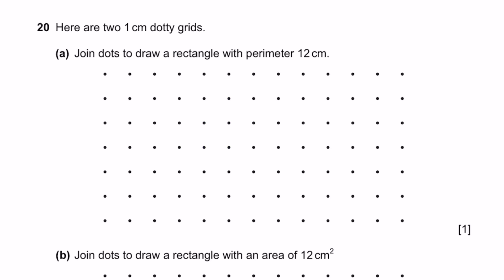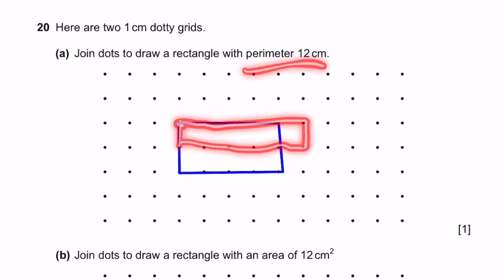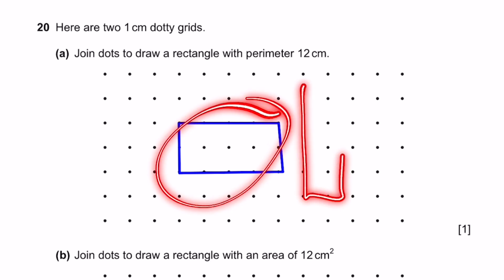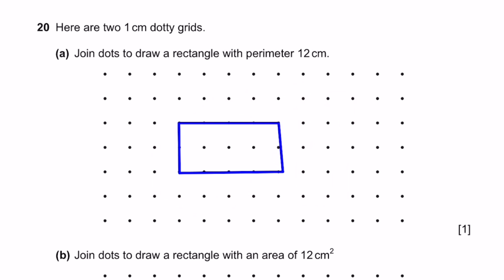Question 20. Here are two 1 centimeter dot grids. A. Join dots to draw a rectangle with perimeter 12 centimeters. That means 2 into L plus B is equal to 12 centimeters, since that's the formula. So that means L plus B is equal to 6 centimeters. So we can say that the length is 4 centimeters and width is 2 centimeters, for example. We can also draw a rectangle with 5 centimeters by 1 centimeters, because the perimeter will still be 12. But it's best not to draw 3 by 3, because this will become a square, not a rectangle. So there are only 2 answers to this question. You can also draw this one in a vertical way. That's the answer.